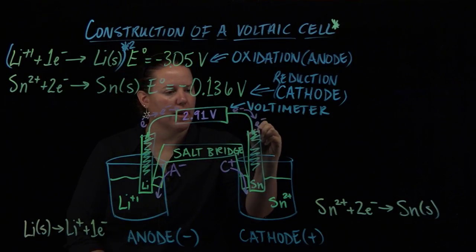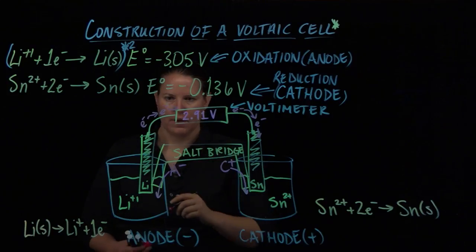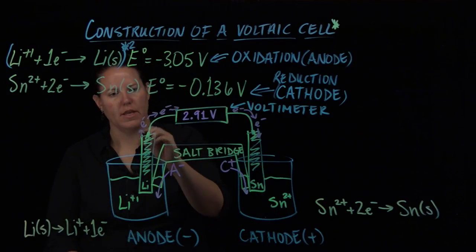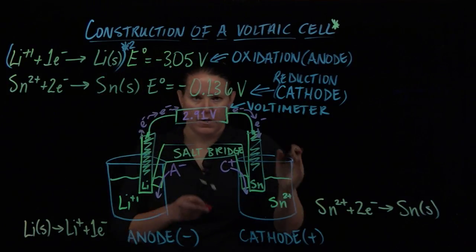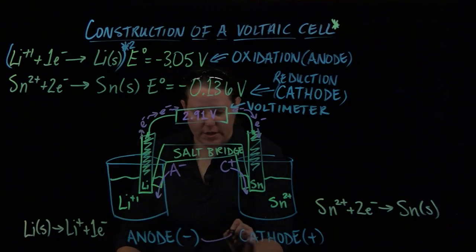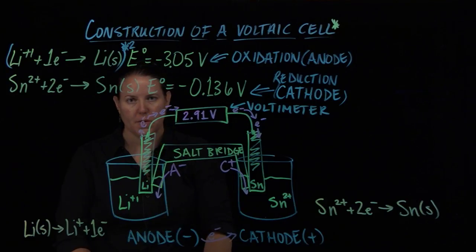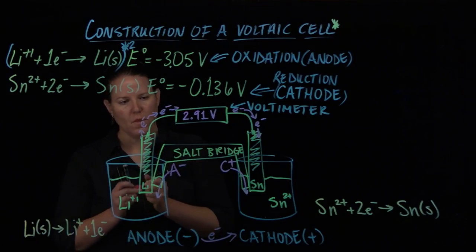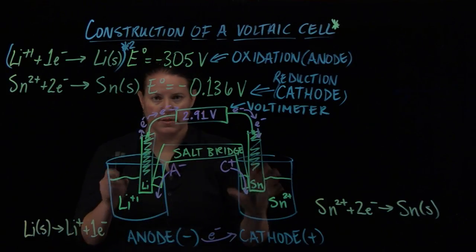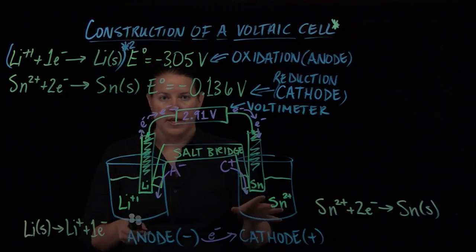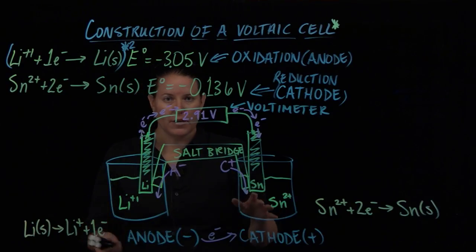And we also want to make sure that we recognize that electrons are flowing through the wiring, through the wiring and the voltmeter. That's how we can read the voltage. And they flow from anode to cathode. Electron transfer happens from anode to cathode. This is for a voltaic cell.